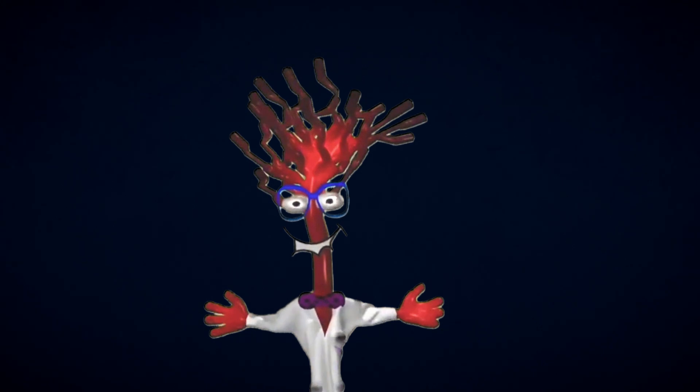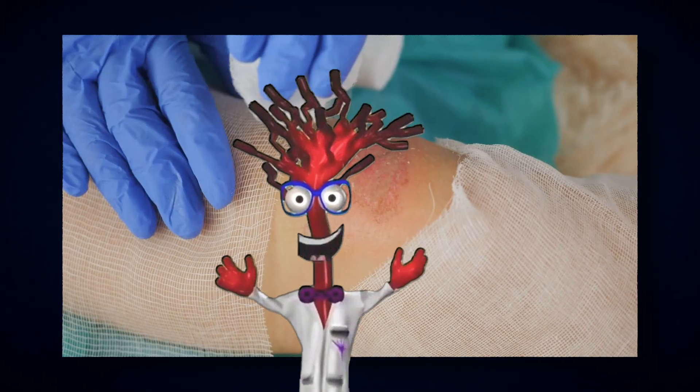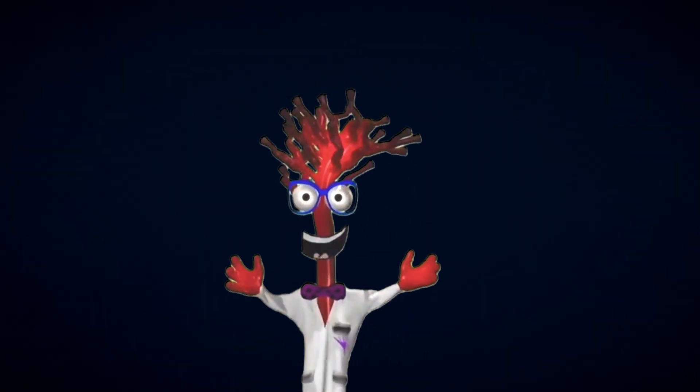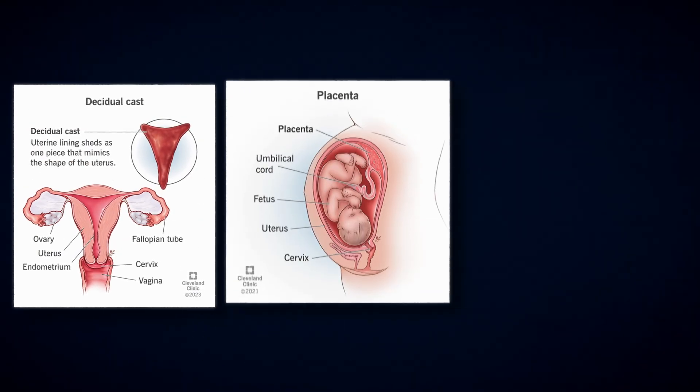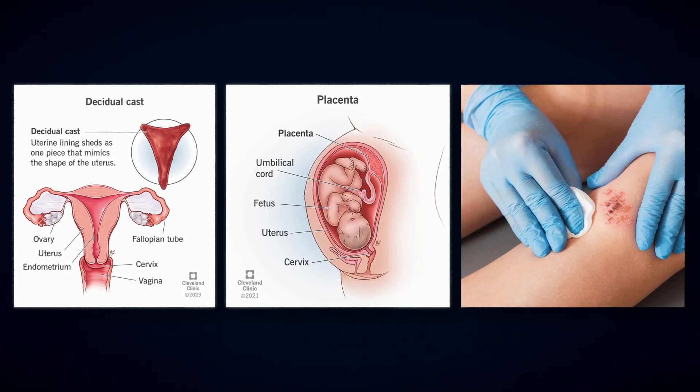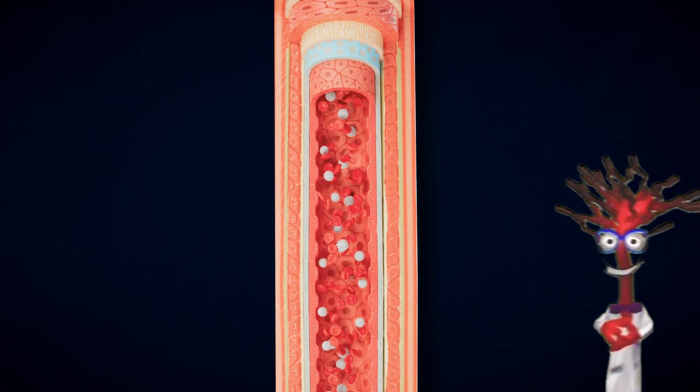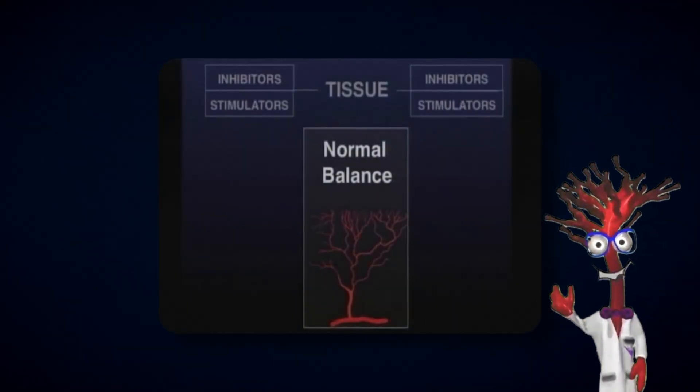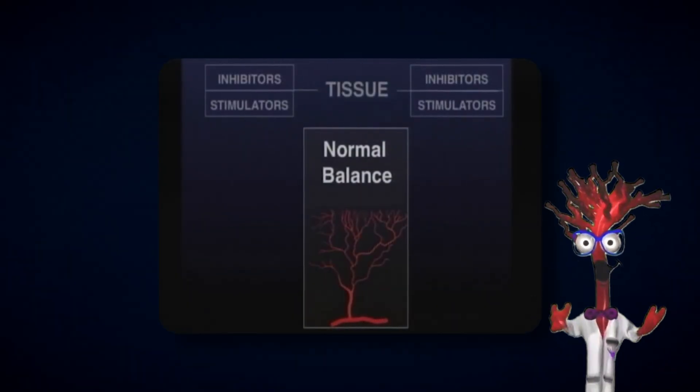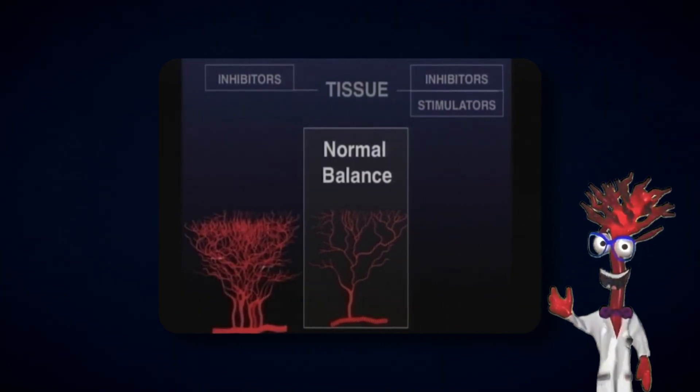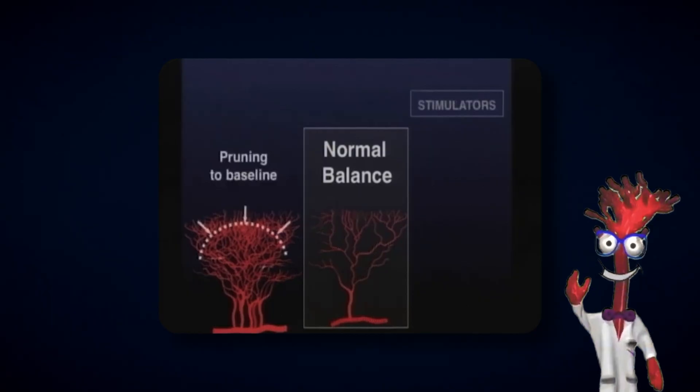What's remarkable is that you develop almost all of these vessels before you're even born. As adults, we only grow new blood vessels in a few special situations: building the uterine lining each month, forming the placenta during pregnancy, and healing wounds after an injury. This ability to tightly regulate blood vessel growth depends on a beautifully balanced system. The body uses stimulators called angiogenic factors to grow new vessels when needed. And when those vessels are no longer necessary, the body releases natural inhibitors to prune them back. It's a constant balance.